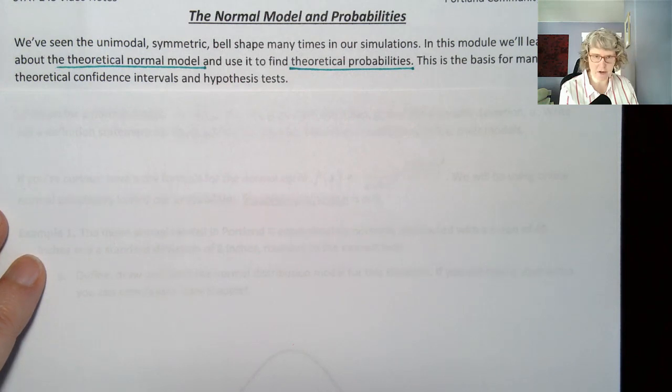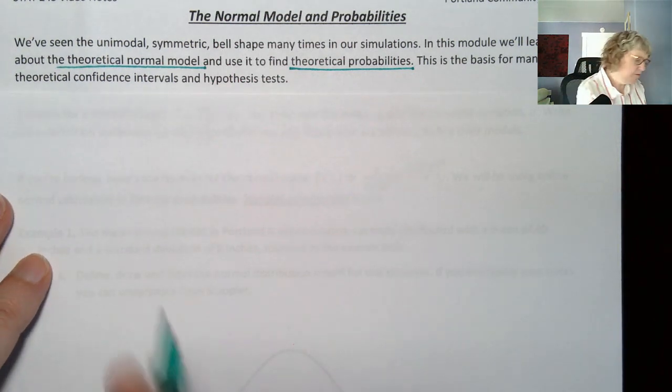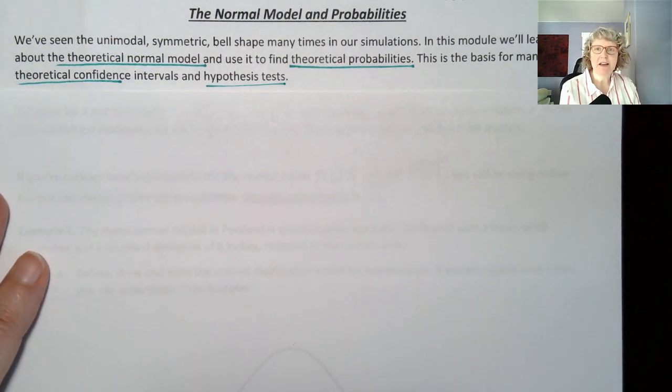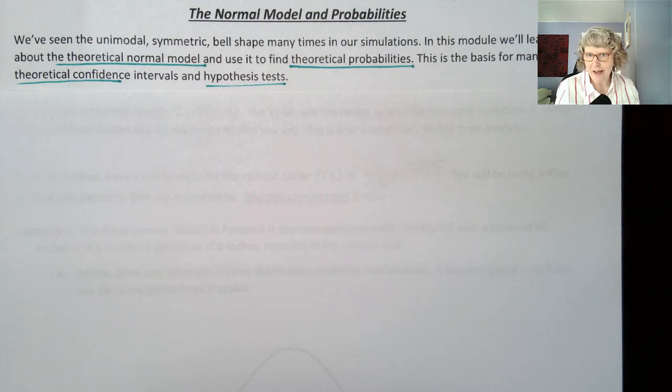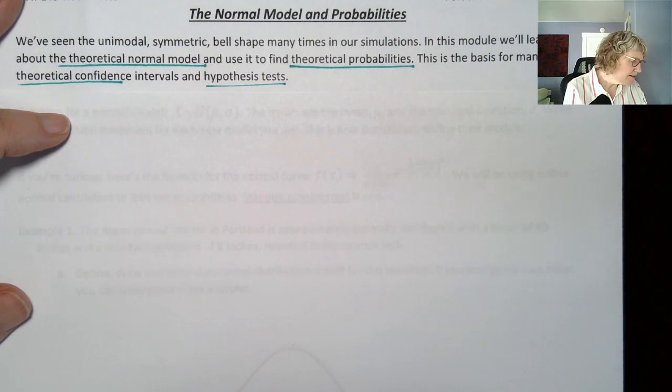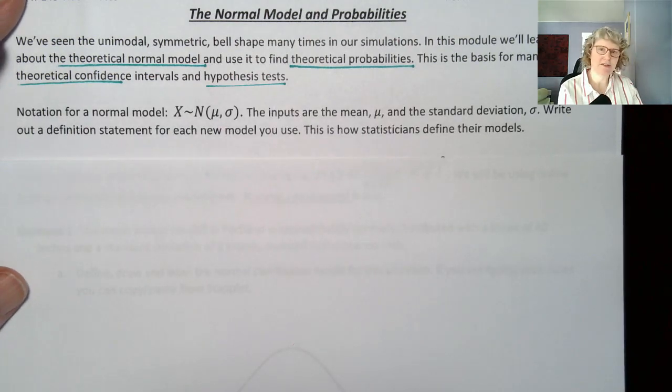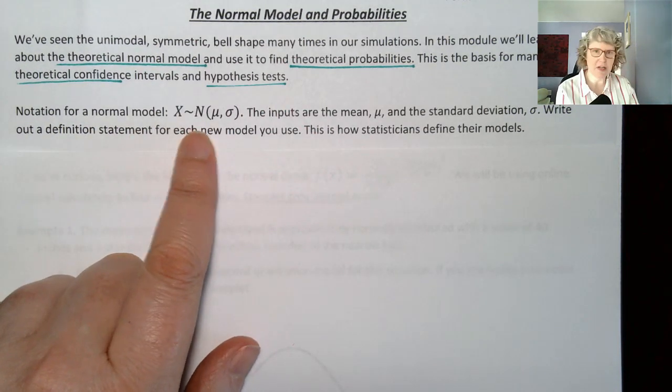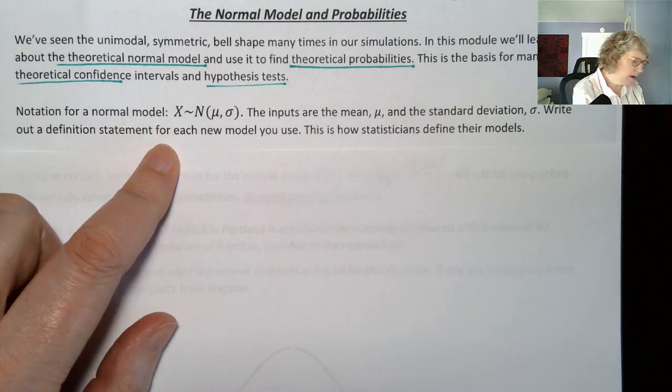This is the basis for all the theoretical confidence intervals and theoretical hypothesis tests. We've said things like approximate p-value, and that's because it's based on a simulation. Now we'll be finding exact values due to the theory, but everything's still an approximation in statistics. So I thought you might be interested to see the actual equation for it. I've got that in just a minute, but first I want to talk about the notation. This is how statisticians define a model.